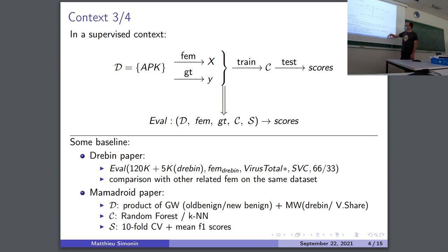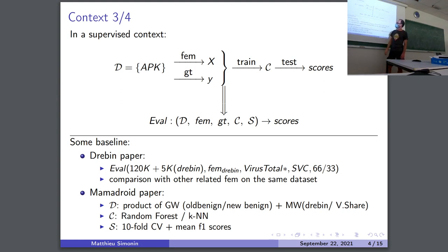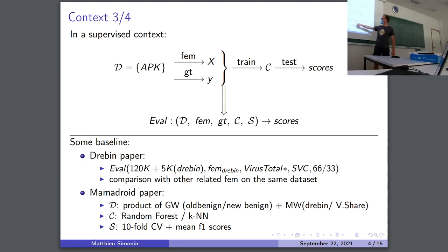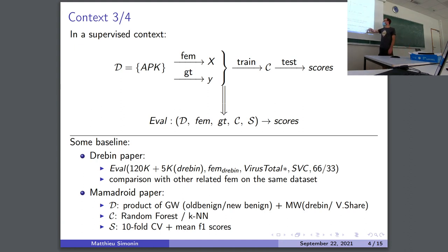For example, Dribin is a very famous paper for historical reasons. It makes the evaluation on some applications — 5k malware and more than 100,000 benign. The core contribution is the feature extraction. The ground truth was based on VirusTotal, which is basically an API you can request to know if an application is classified as malware or not. This is very much a moving target — if you request the same set of APKs today, you will not end up with the same ground truth that was used for Dribin at that time. So it's kind of not reproducible. They use an SVM, and a train/test split of 66% training and 32% test.